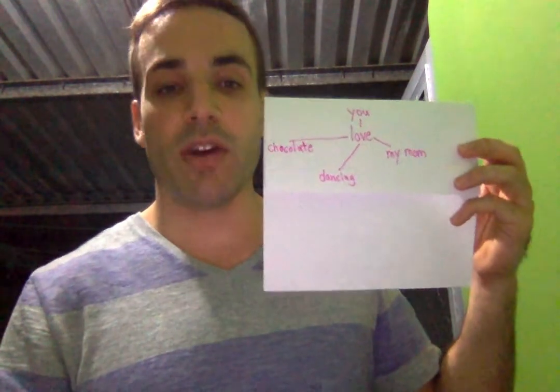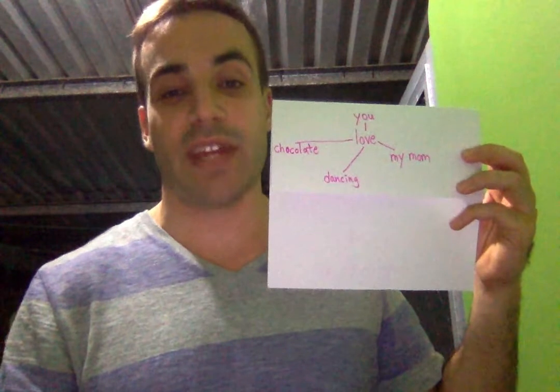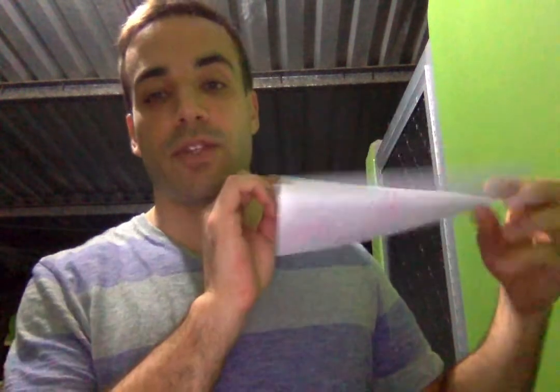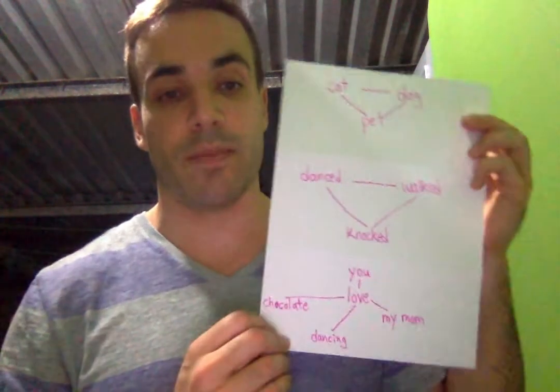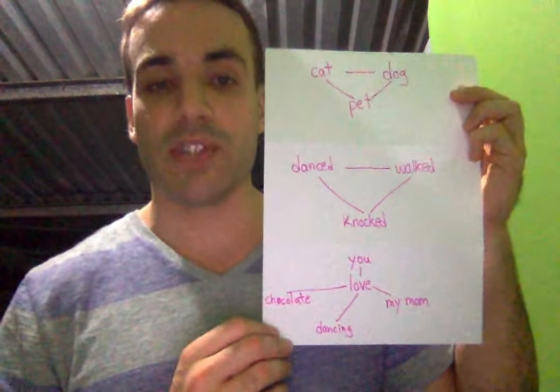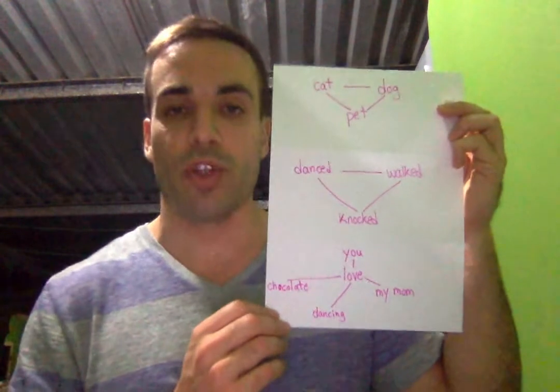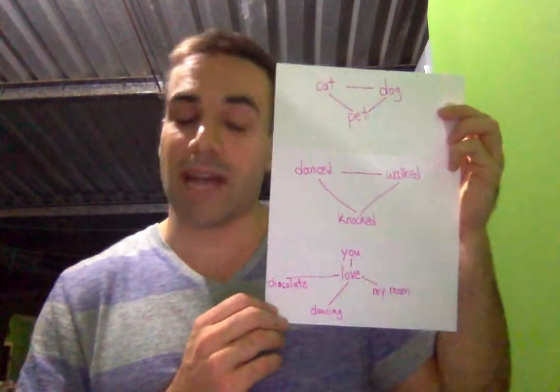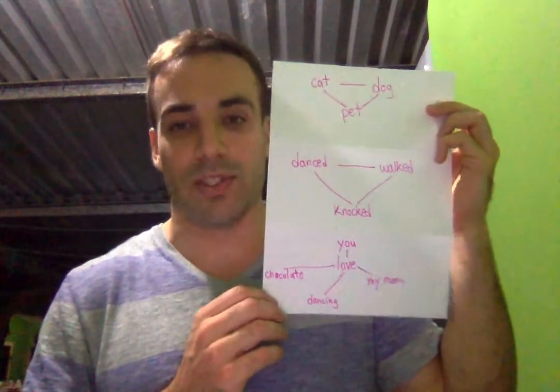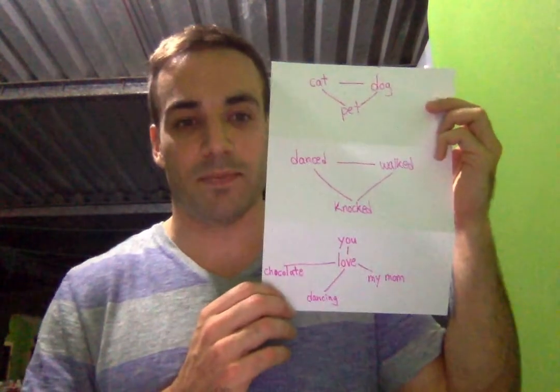There are ten words on average that could be chosen from to follow any particular word, but sometimes there is only one choice, and other times there are thousands of choices. This explains some common experiences, like finishing someone's sentence.